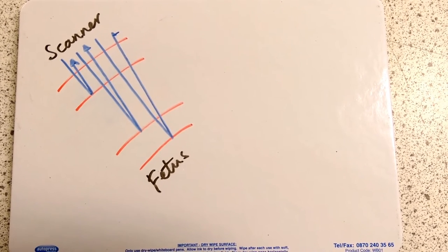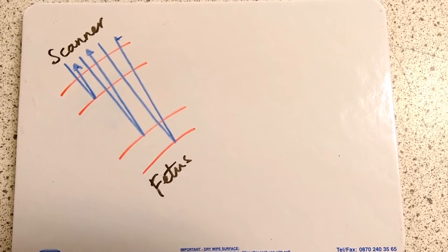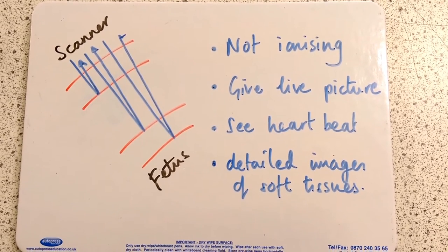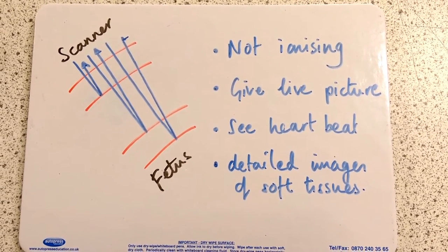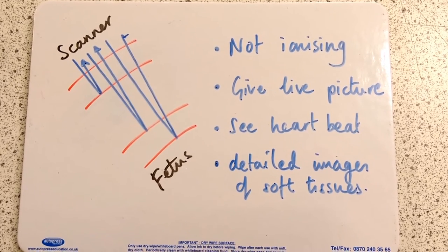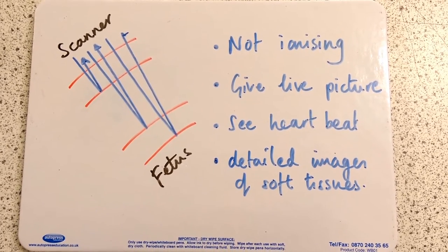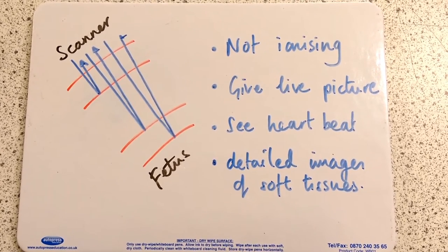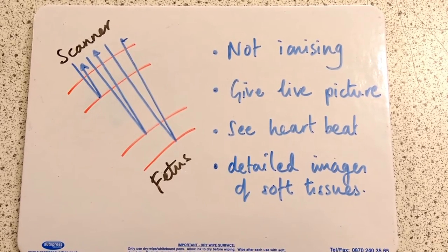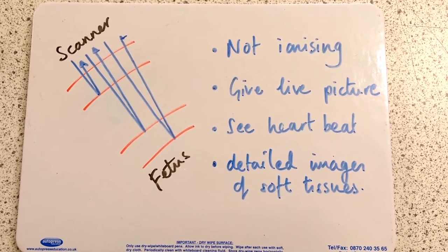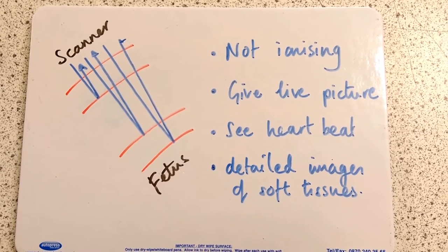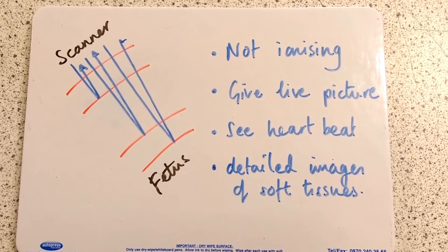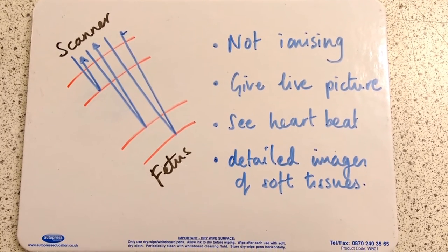There are loads of advantages to ultrasound scanners for medical uses above x-rays. Some advantages are they're not ionizing, unlike x-rays which can damage living cells or cause mutations. They give a live picture so we can see the fetus heartbeat, or even use Doppler shift to see blood flow in somebody who might have heart problems. They also can give you detailed images of soft tissues, because they're reflecting off the boundaries between different materials inside the body. X-rays will just pass straight through and are much better for imaging bone.